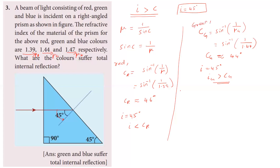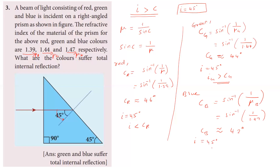For blue light: the critical angle equals sin inverse of 1 by 1.47, which is approximately 43 degrees. The angle of incidence (45 degrees) is greater than the critical angle, so blue light also undergoes total internal reflection. Conclusion: green and blue light undergo total internal reflection; red light does not.